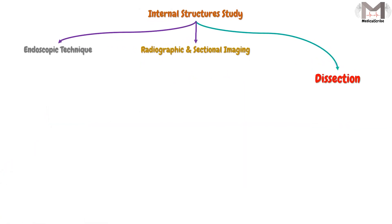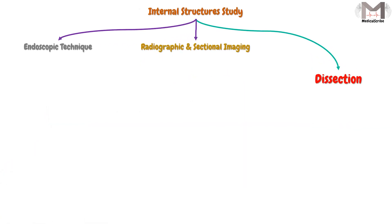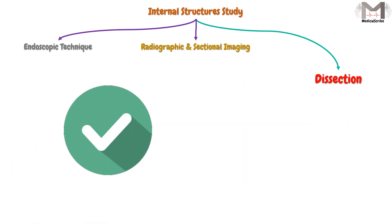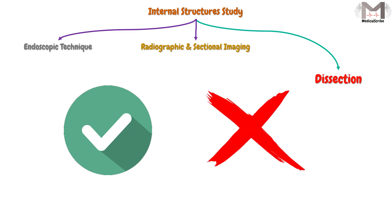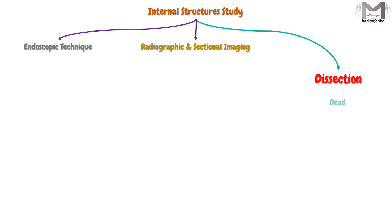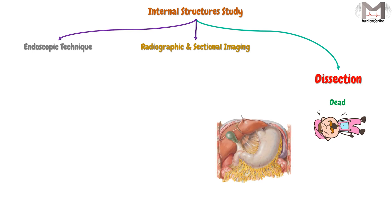Regarding the first method which is the dissection, it will serve us in some points while it will not in others. This method will be applicable if the person is dead, and it will help us understand the internal structures very well. But if the person is alive, we can't use this method of course.